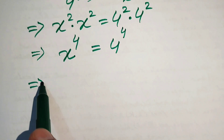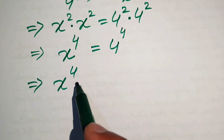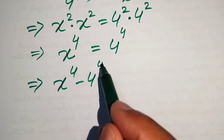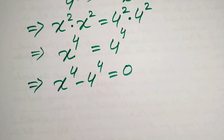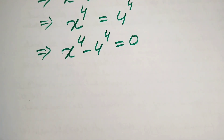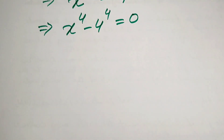We move 4 to the power of 4 to the left-hand side, giving us x to the power of 4 minus 4 to the power of 4 equals 0. This is a fourth-order equation, which means it has 4 roots or 4 solutions. Now we find all four solutions.